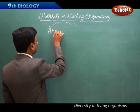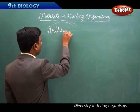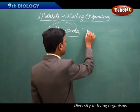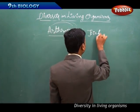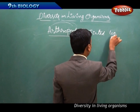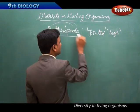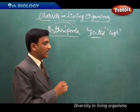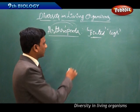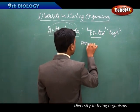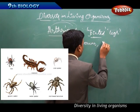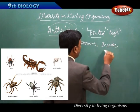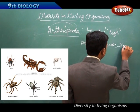The next phylum is Arthropoda. 'Arthropoda' means jointed legs — 'arthro' means jointed. Animals in this phylum have jointed legs. Examples include prawns, insects, and scorpions.